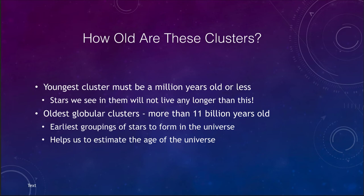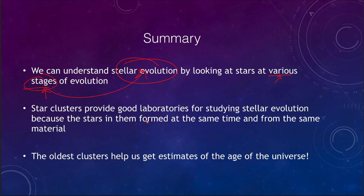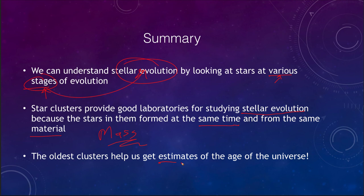In summary, we have a way of understanding stellar evolution by looking at stars at their various stages — we need not watch one star through all its stages. Star clusters provide laboratories for studying stellar evolution as a controlled experiment: all stars formed at the same time and from the same material, so the only variable is mass. Studying older clusters also allows us to estimate the age of the universe — something we explore further in cosmology.